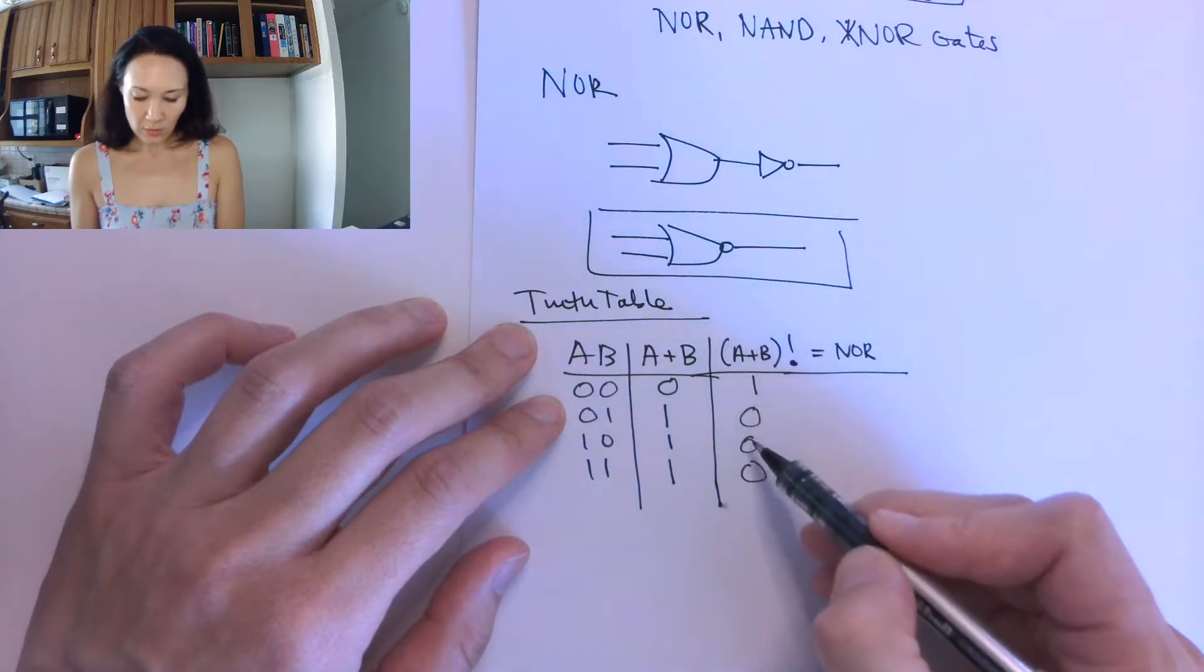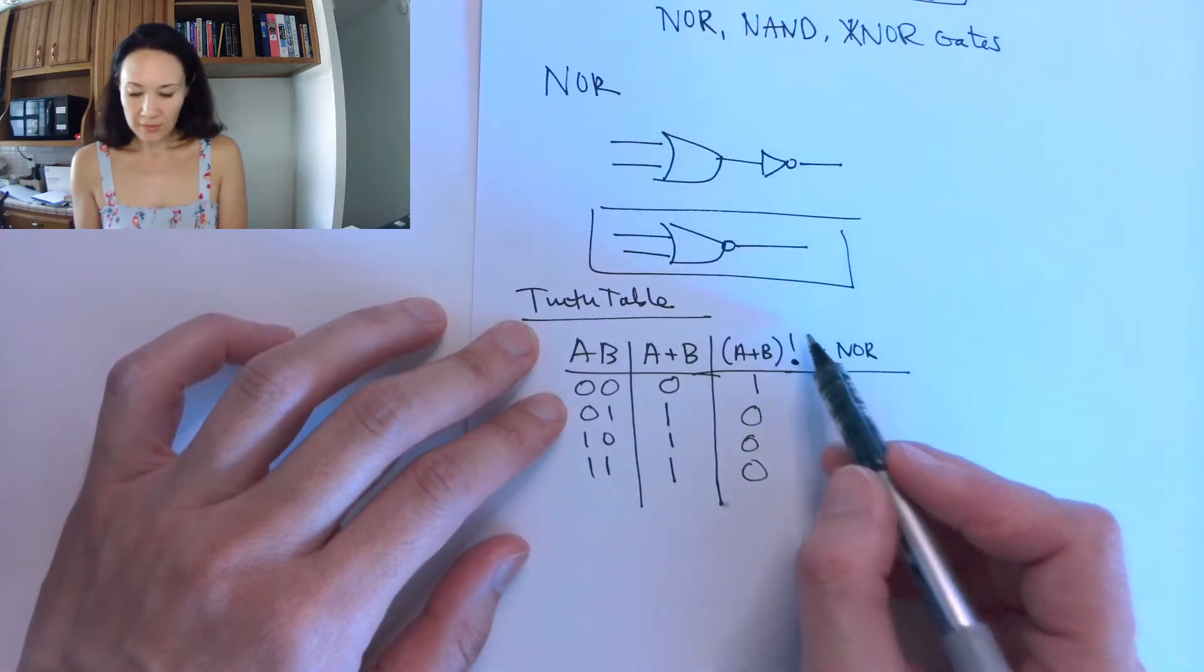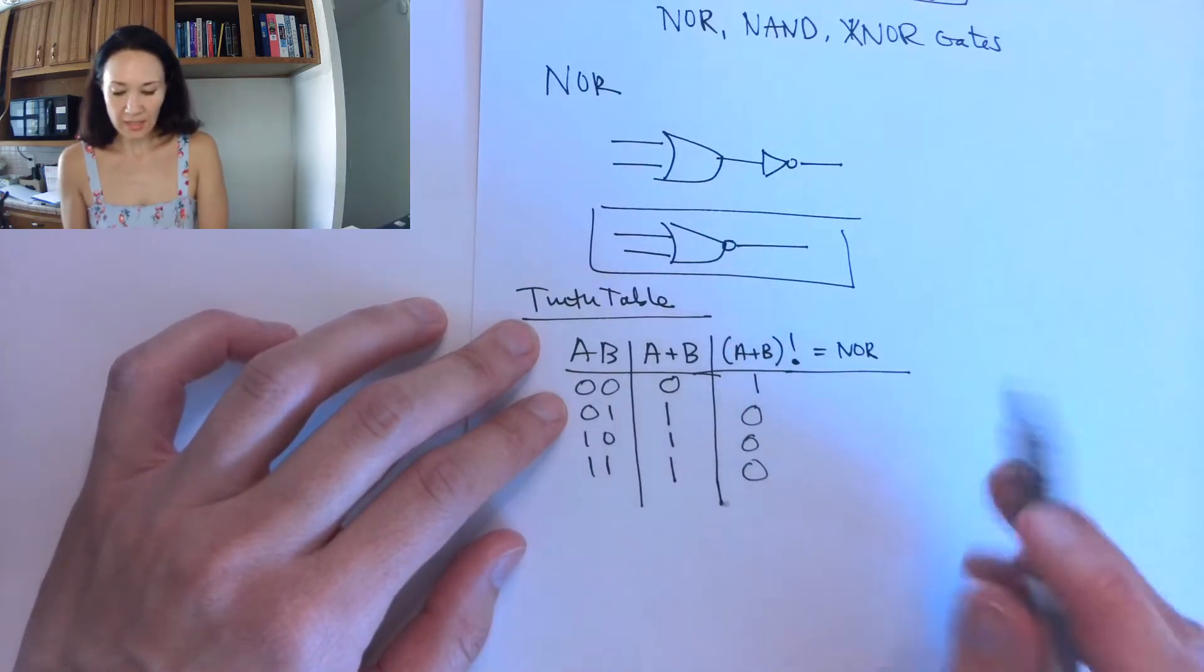So 1, 0, 0, 0 becomes the truth table for a NOR gate. And this is how we would write it in function notation.